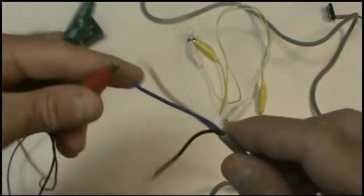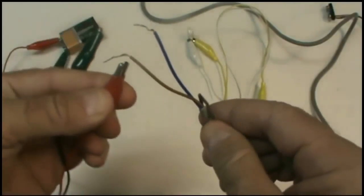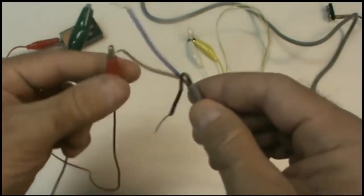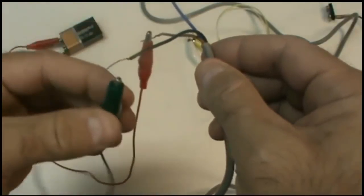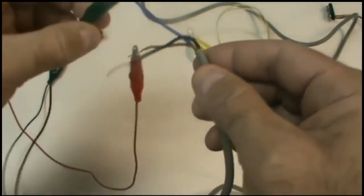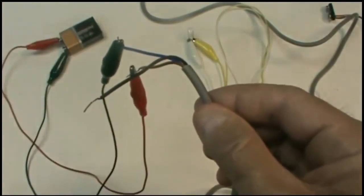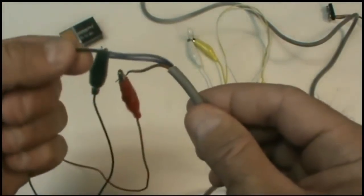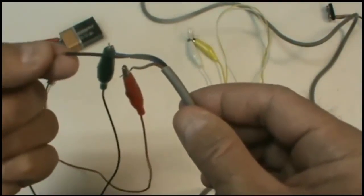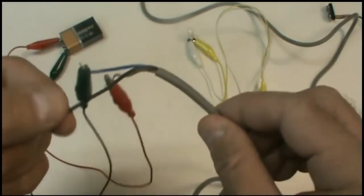So the red lead's going to go to my brown wire. The green lead is going to go to my blue wire. Don't go to black. That's easy to do because most of the time we identify black with negative, but that's not the case with sensors.